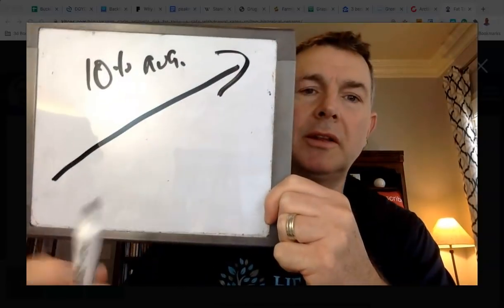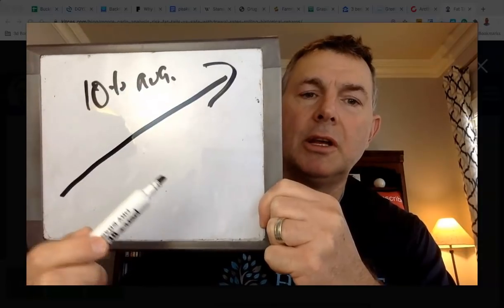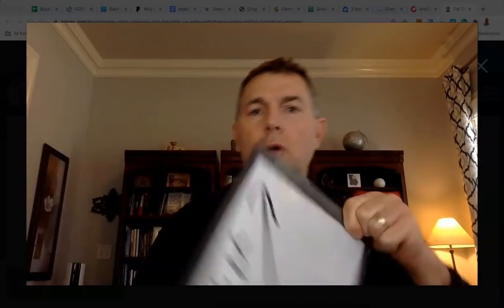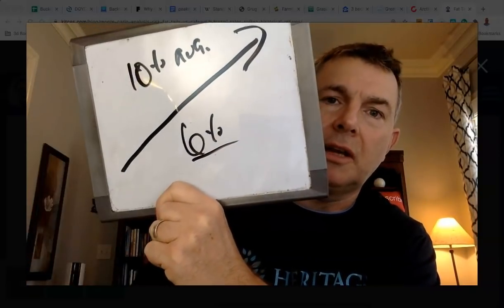What Monte Carlo is doing is using simple inputs: the average expected rate of return, and the volatility around that average. In the old days we used linear rates of return — we'd say you're going to get a 10% rate of return on average, each and every year 10%, 10%, 10%. That would mean you could take 6% out and never run out of money. People get upset when I say this, but Dave Ramsey had a video on that and I'm just like — no one uses linear rates of return anymore.